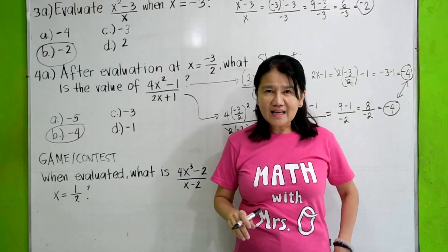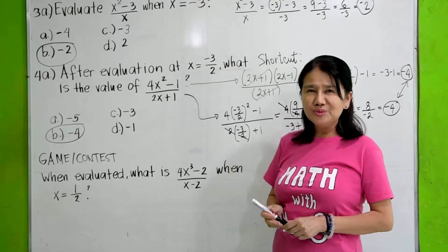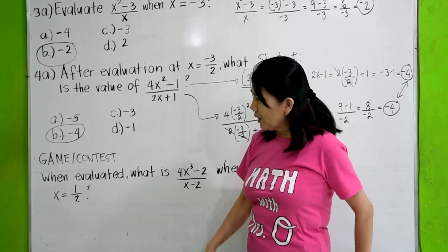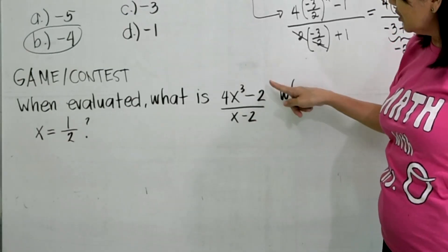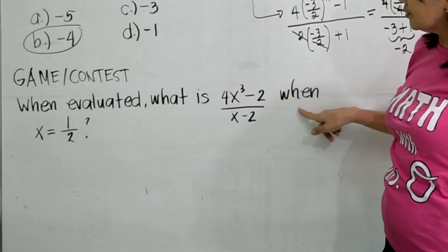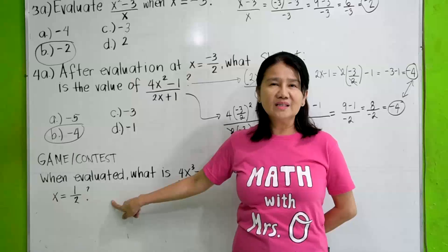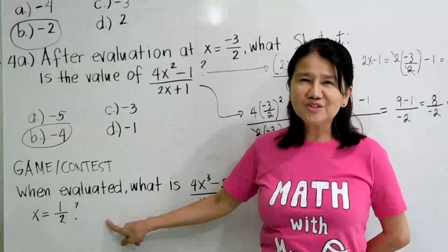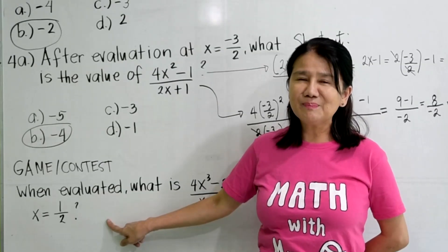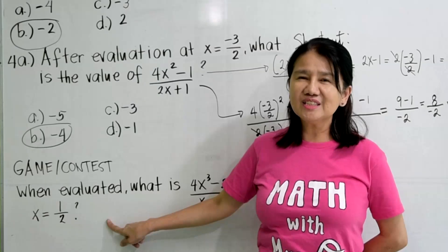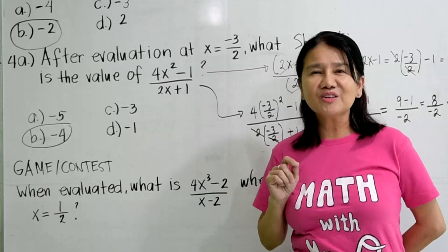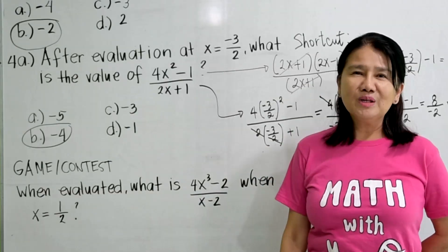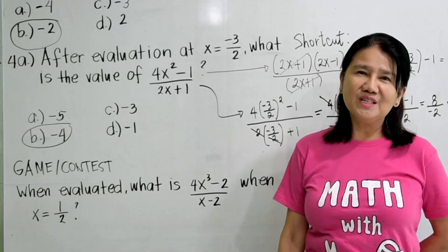Now, I have a game or contest for you. We have a problem here. When evaluated, what is 4x cubed minus 2 over x minus 2 when x equals 1 half? The game is this. You try to solve this. And then please write your answer in the comment. The reward is, the first one who will write the correct answer in the comment will be recognized in my next video.